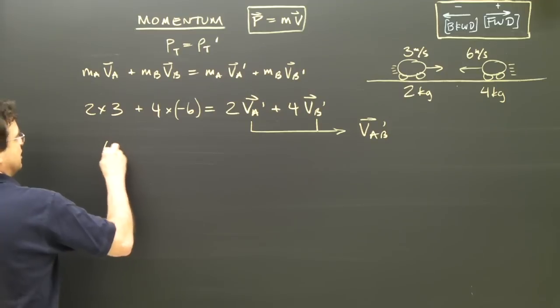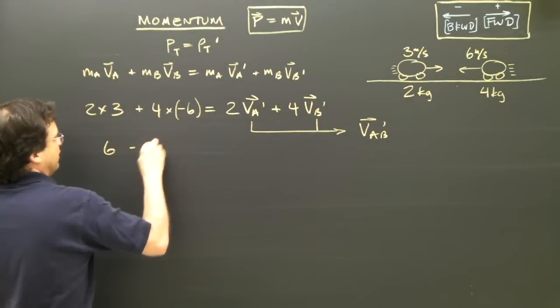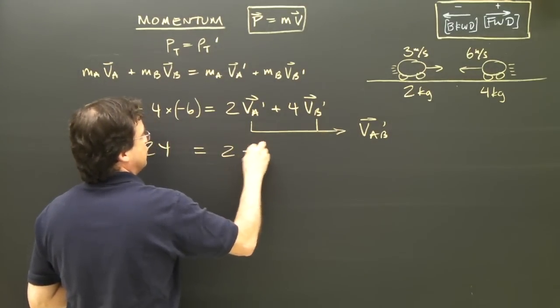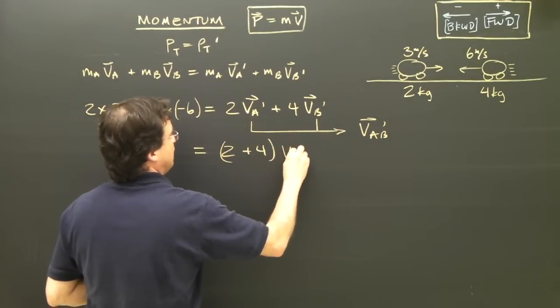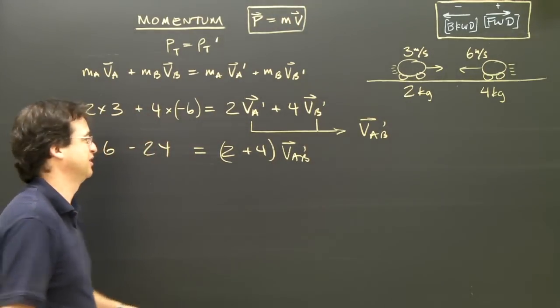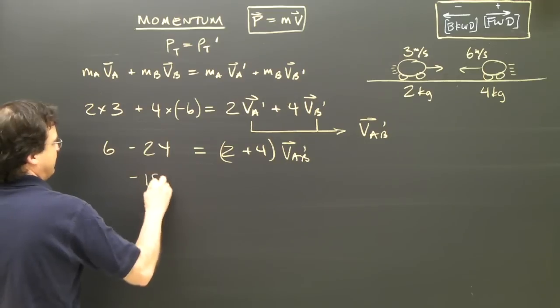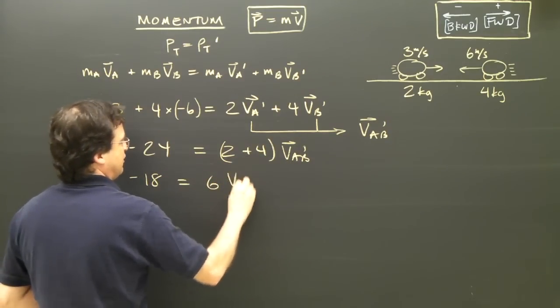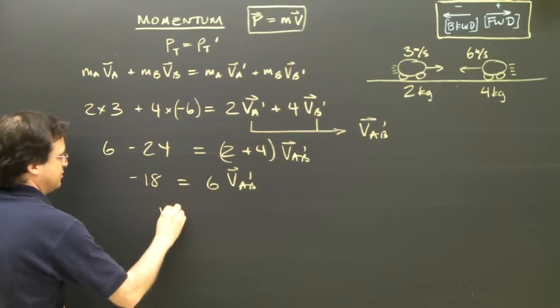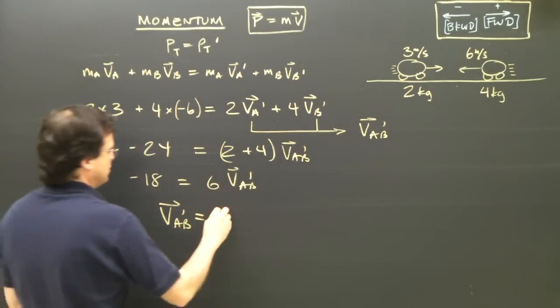So I've got 3 times 2 is 6. 6 times 4 is 24, so minus 24. Equals, since these two are the same velocities, I've got 2 plus 4 vAB. The two masses are joined together and they travel with one velocity. So 6 from 24 is negative 18, and this is 6 vAB afterwards. So 18 divided by 6, vAB afterwards is equal to 18.